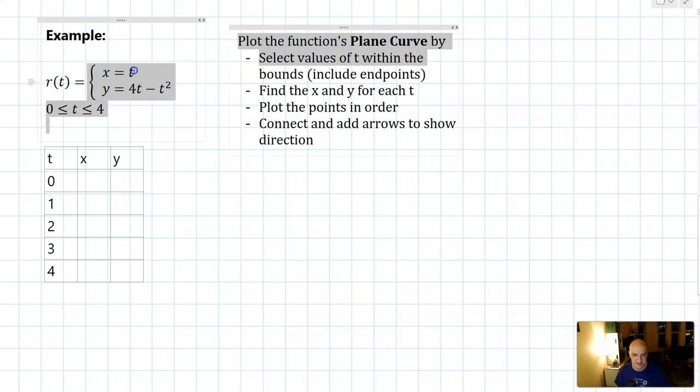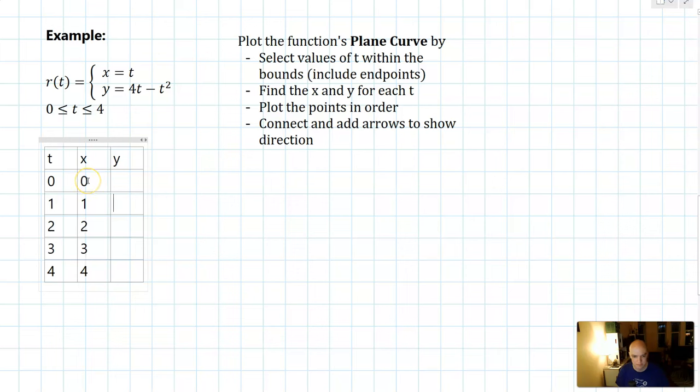Then I'm going to look at the x equation. It says x equals t. So x just needs to equal the value here. When t is 0, x is 0. When t is 1, x is 1, and so on. The y one's a little harder. We have to plug in the values. So when t is 0, 4 times 0 minus 0 is still 0. 4 times 1 is 4 minus 1 squared is 3. 2 times 4 is 8 minus 2 squared is 4. 3 times 4 is 12 minus 3 squared, which is 9, and that's equal to 3. And 4 times 4 is 16 minus 4 squared, which is also 16, gives us 0.